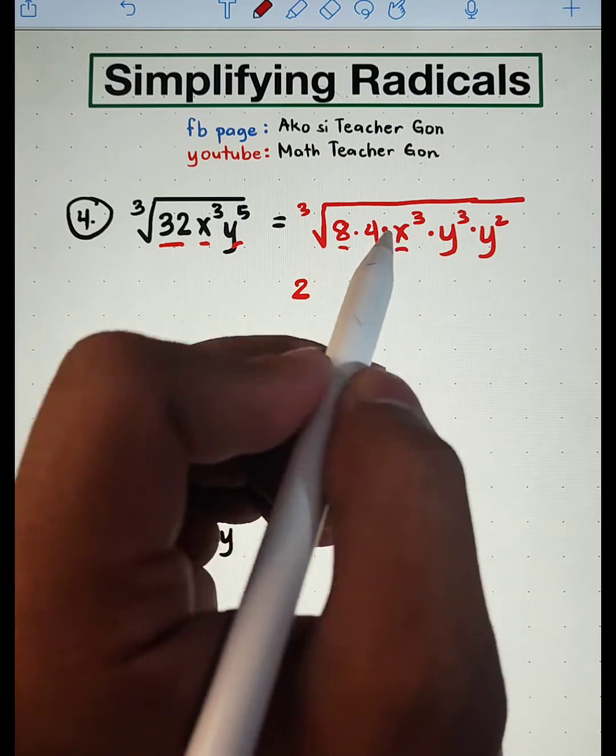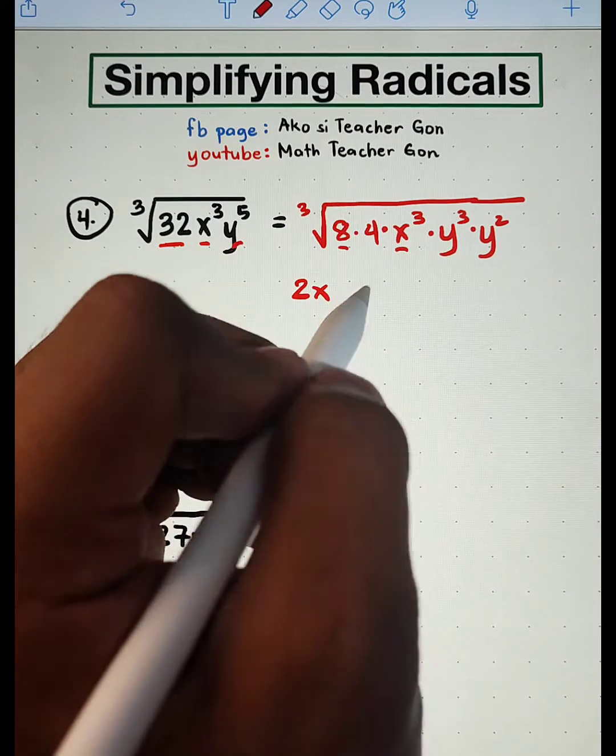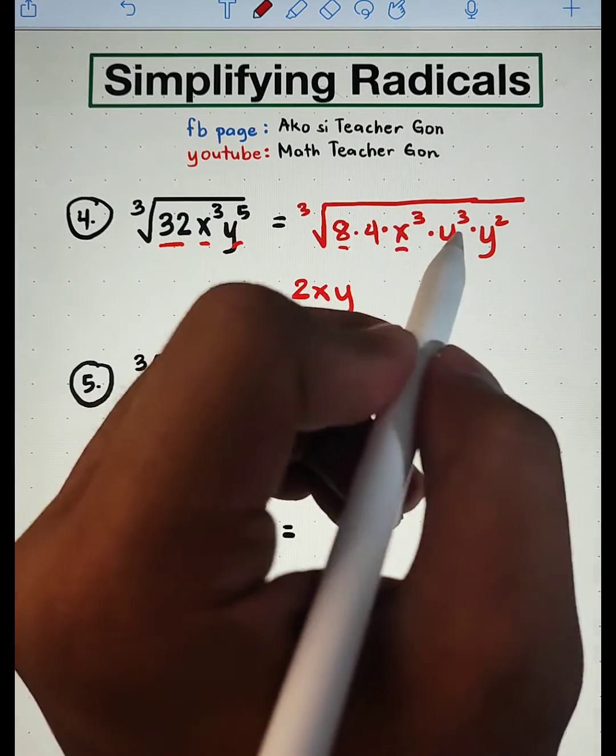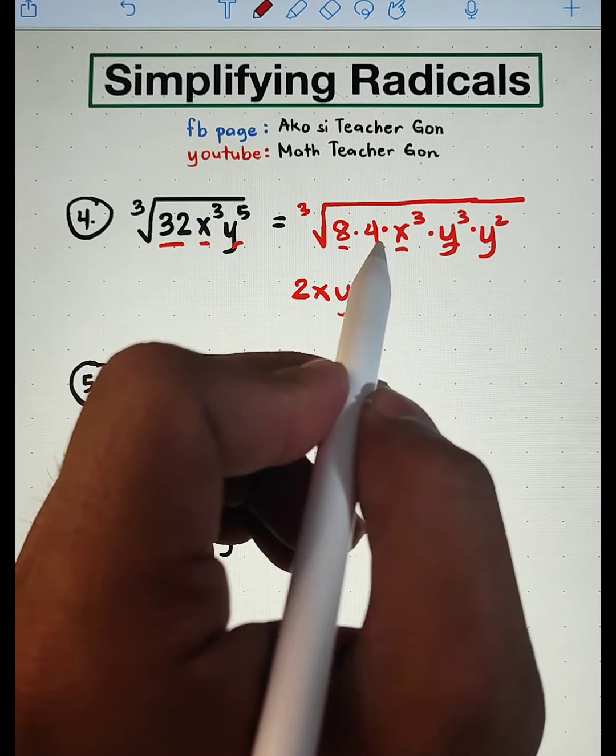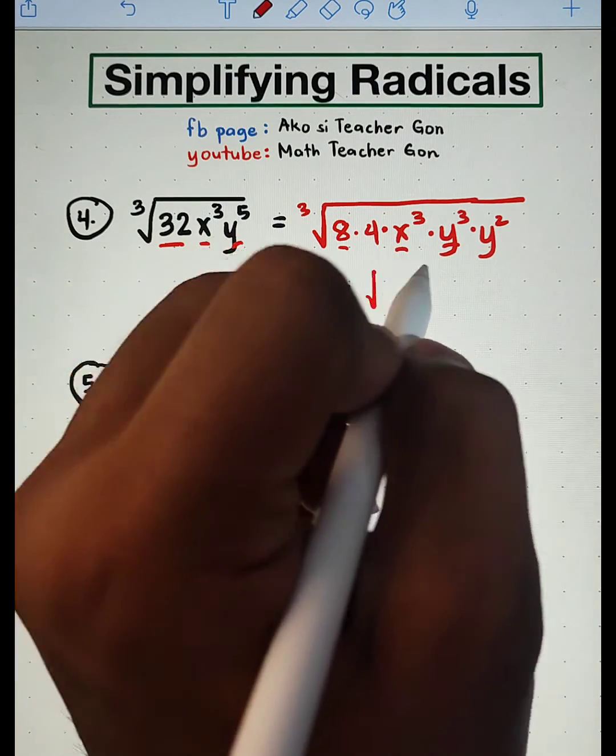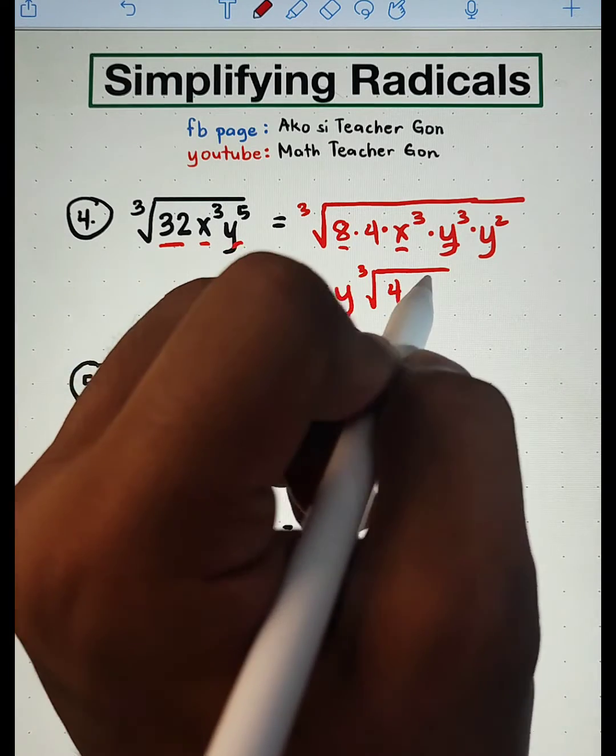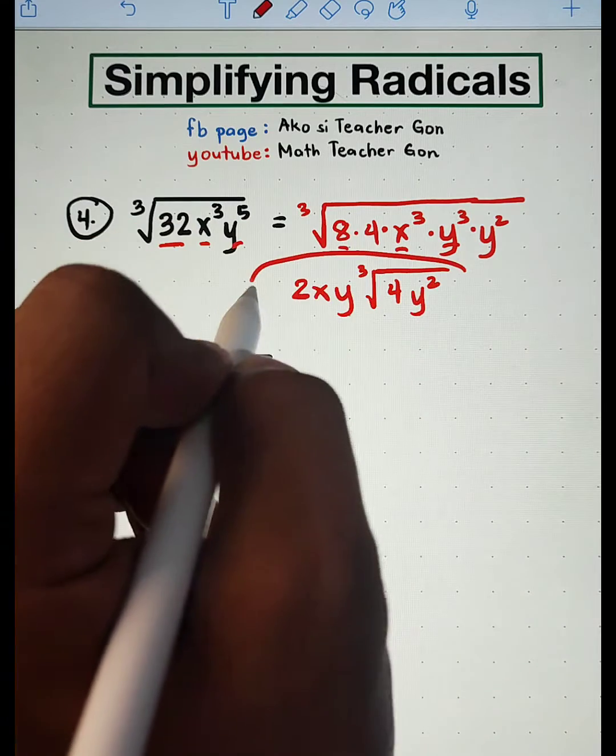And all of those radicands that don't have an underline will remain inside. That is the cube root of 4y squared. And this is the answer.